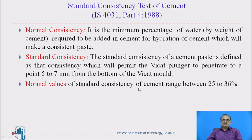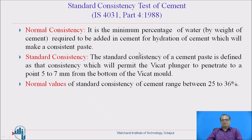Now let us study the standard consistency test of cement. This test is carried out as per IS 4031 Part 4, 1988. Normal consistency is the minimum percentage of water by weight of cement which is required to be added for its hydration and which will form a consistent paste. Standard consistency of a cement paste is defined as that consistency which will permit the Vicat plunger to penetrate to a point 5 to 7 mm from the bottom of the Vicat mold. The normal range of standard consistency of cement is 25 to 36 percent.